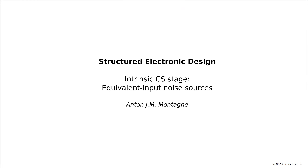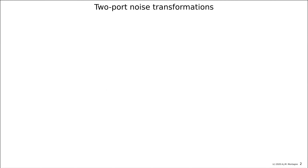This lecture is about finding the equivalent input noise sources of a CS stage without any source connected to it — just the biased CS stage at its operating point. It's good to start with a recap from the bachelor-phase course on structured electronic design. This course is built up cumulatively; every lecture uses knowledge generated in the previous one.